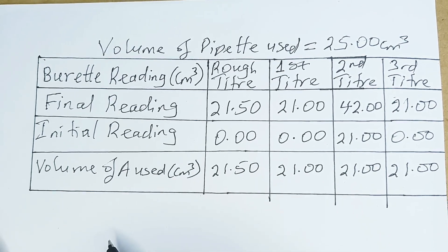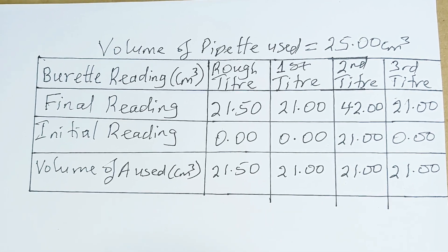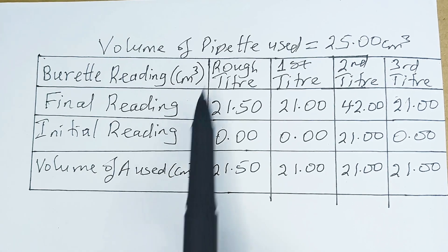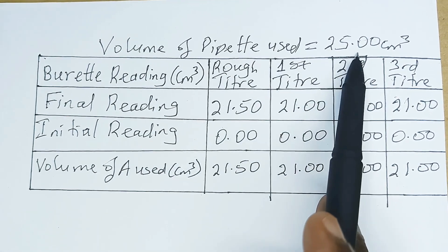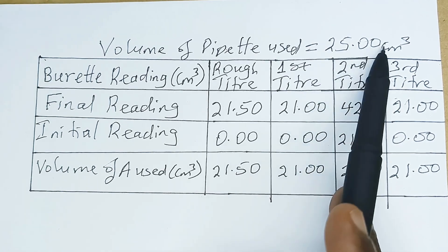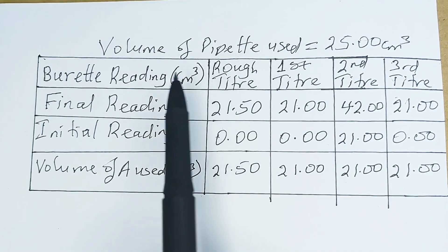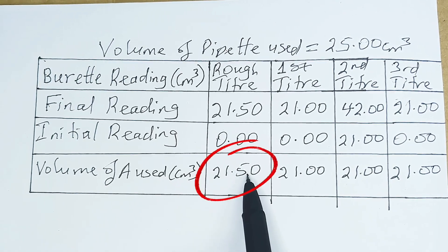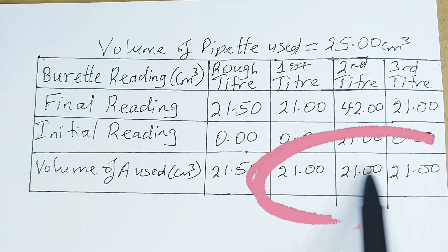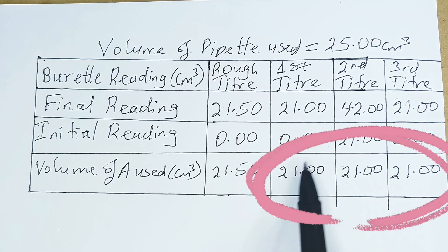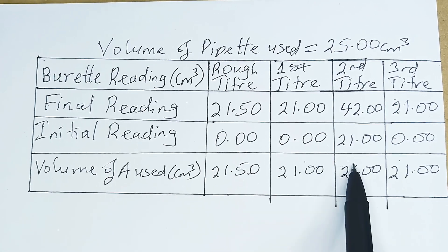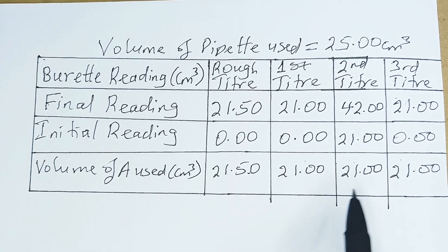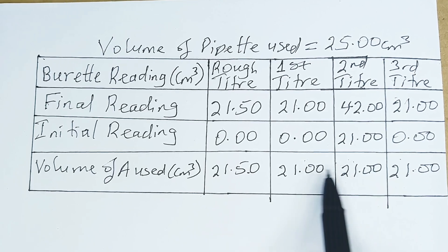Now, we are to tabulate our results. The question says tabulate your results and calculate the average volume of A used. We must not forget to put the volume of A used — very, very compulsory. Most of our B is always 25.00 cm³; we must put it. Don't forget to put units. You can see that our rough titre is a bit higher, but the second, third, and fourth titres are the same. Make your first, second and third titre the same.